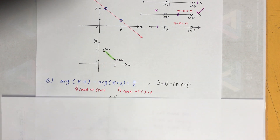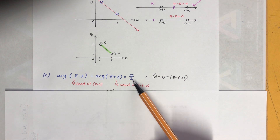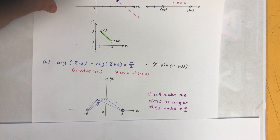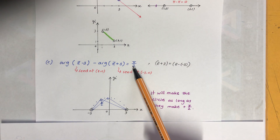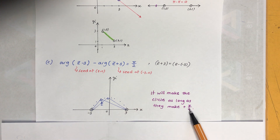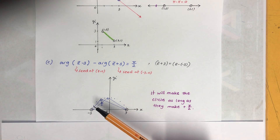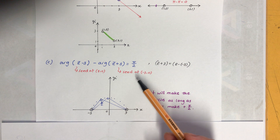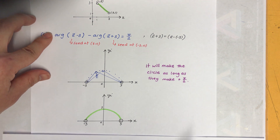Part c: the seeds are at (3, 0) and (-3, 0), and the difference of arguments must equal positive π/2 only (not ±π/2). By the condition from circle geometry, any point that subtends 90 degrees between those two fixed points lies on a circle. Since it's only positive π/2 and not ±π/2, the locus is a semicircle rather than a full circle.